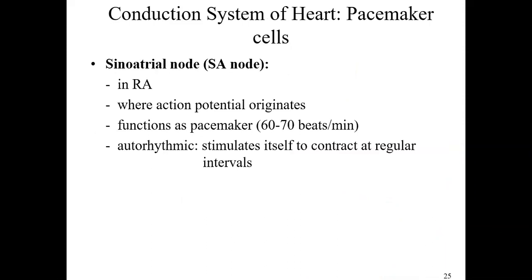The next main section covers the conduction system of the heart, and we need to look at a couple of different pacemaker cells. The first group are called the SA node — a collection of cells in the right atrium known as the sinoatrial node. These cells function as a pacemaker because they are auto-rhythmic, stimulating themselves to contract at a regular interval of about 60 to 70 beats per minute.